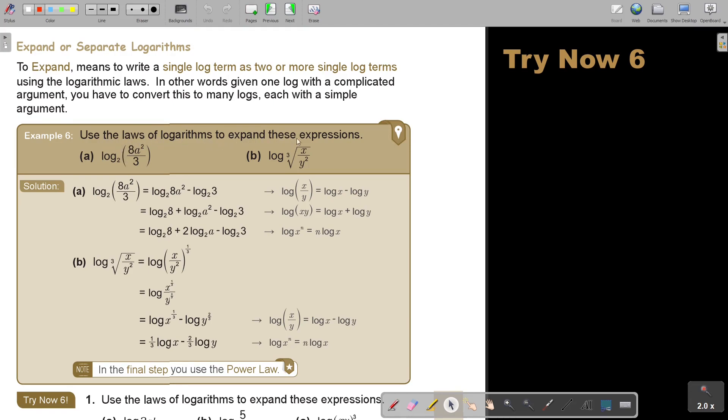Use the laws of logarithms to expand the expression. Remember, the base is two. Now, first, we will address the division. So, we will put a subtraction. That's the rule. Then, we will address the multiplication between 8 and a square. So, we will put an addition there. That one just rewrite. And then, we go for the power law, which we are bringing that to the front. And that's how I separate it. So, there was one term, and now it's one, two, three terms, but meaning exactly the same.